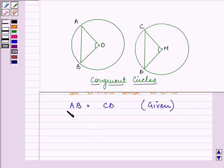Also OA equals CM. This is given to us as two congruent circles have equal or same radius. Similarly OB equals MD.